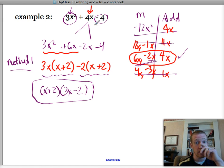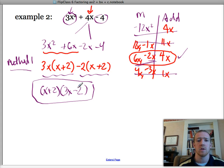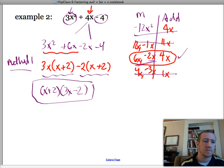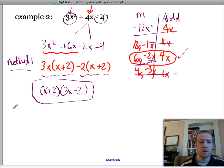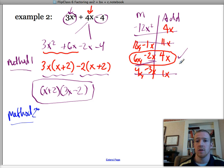And if I were to check it and go back and plug it back in, it would, or not plug it in, if I were to distribute these, foil it out, or grid method it out, I would get that back. Now method 2 is going to be once we get from this spot. So once we've done this, we have to do this, then we do method 2.